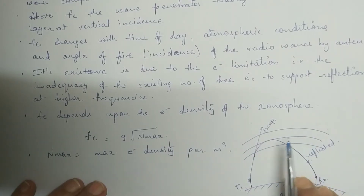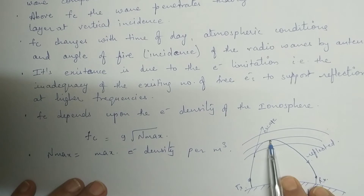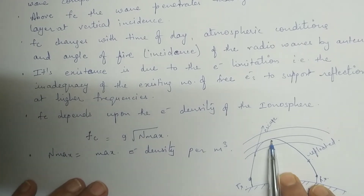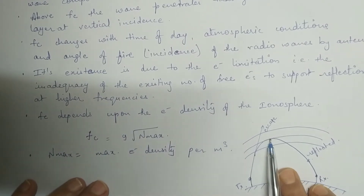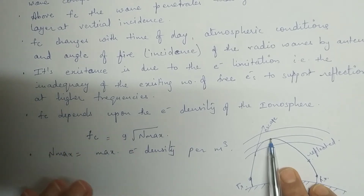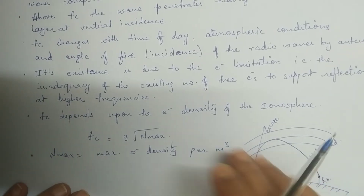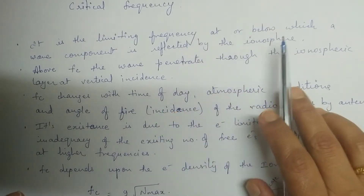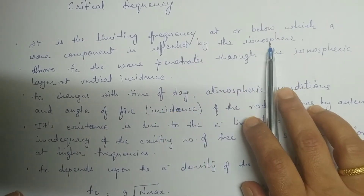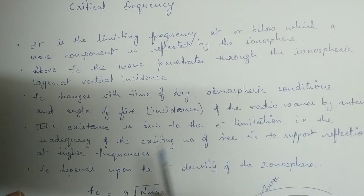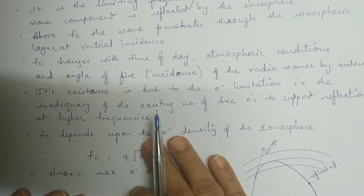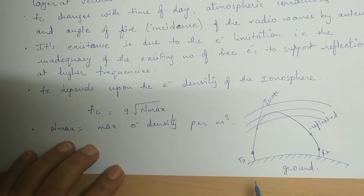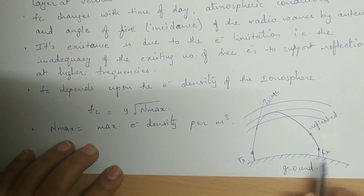The critical frequency is the frequency due to which a layer allows or blocks reflection from itself. It is the limiting frequency at or below which a wave component is reflected by the ionosphere.